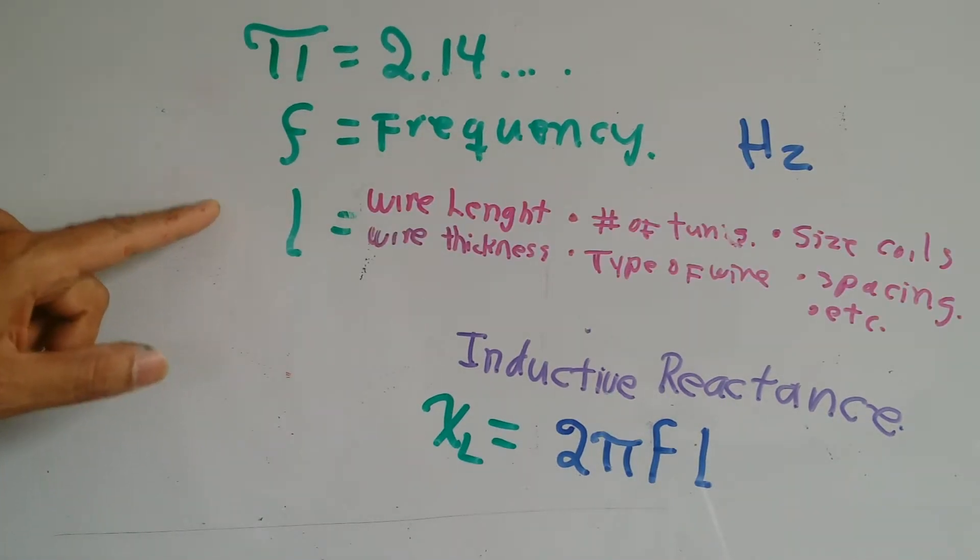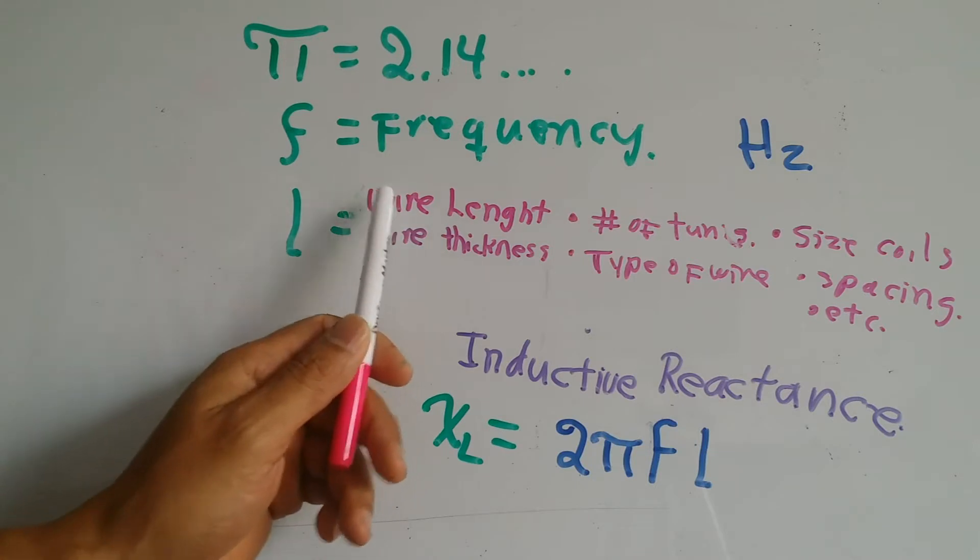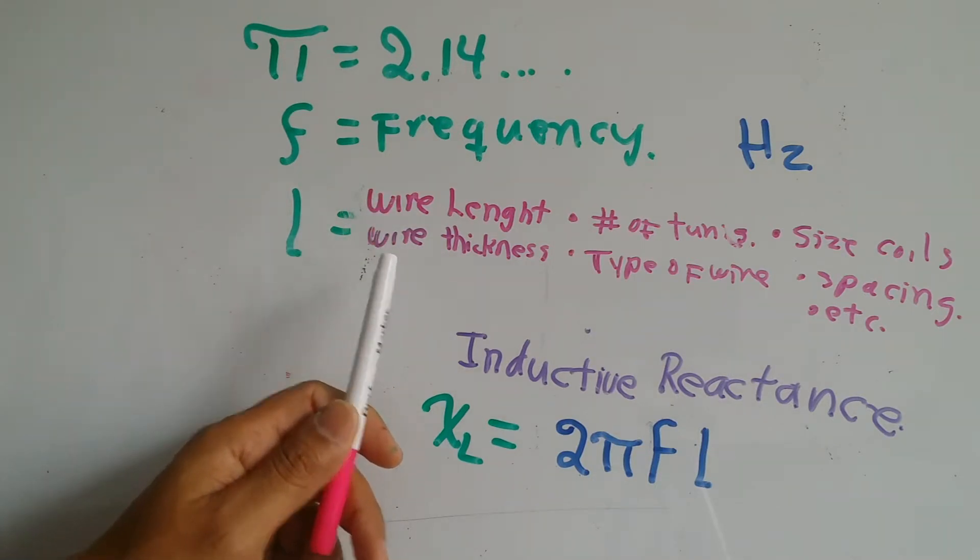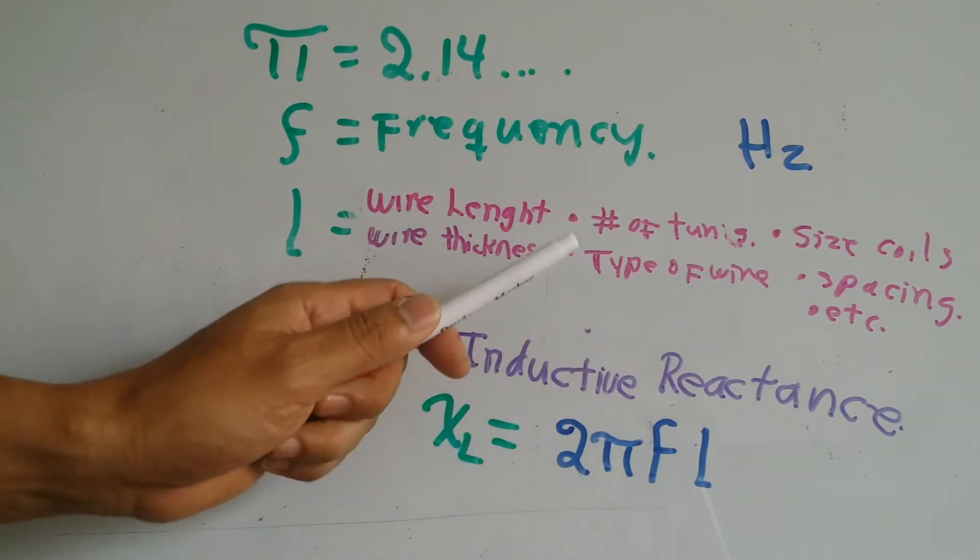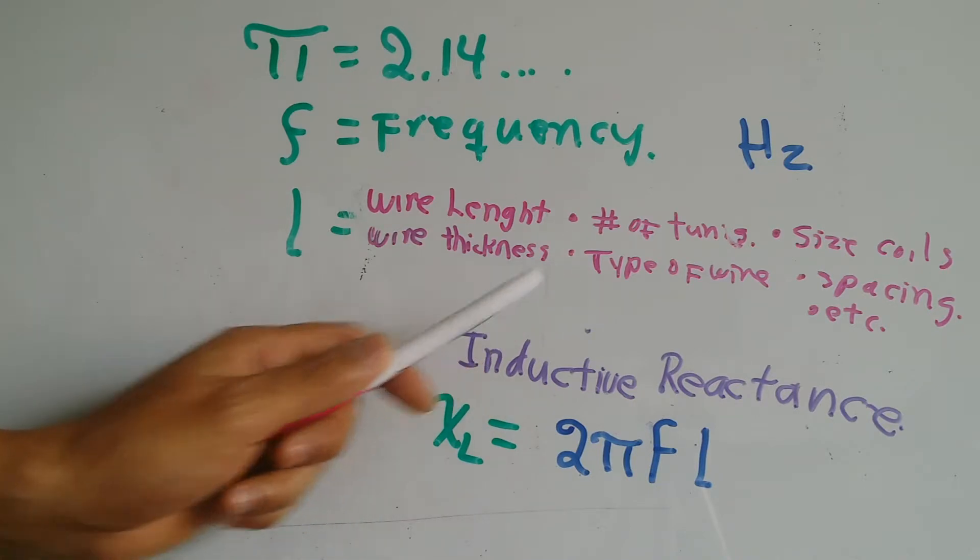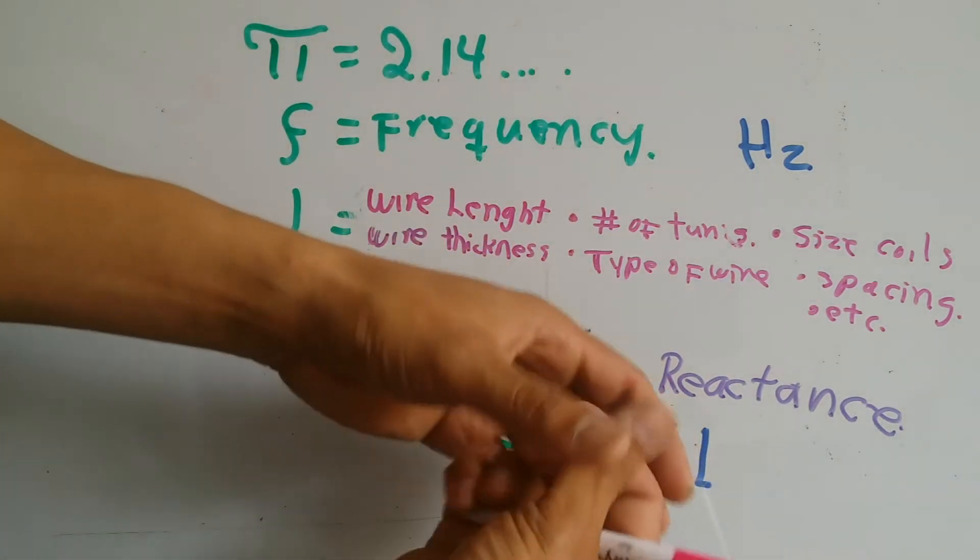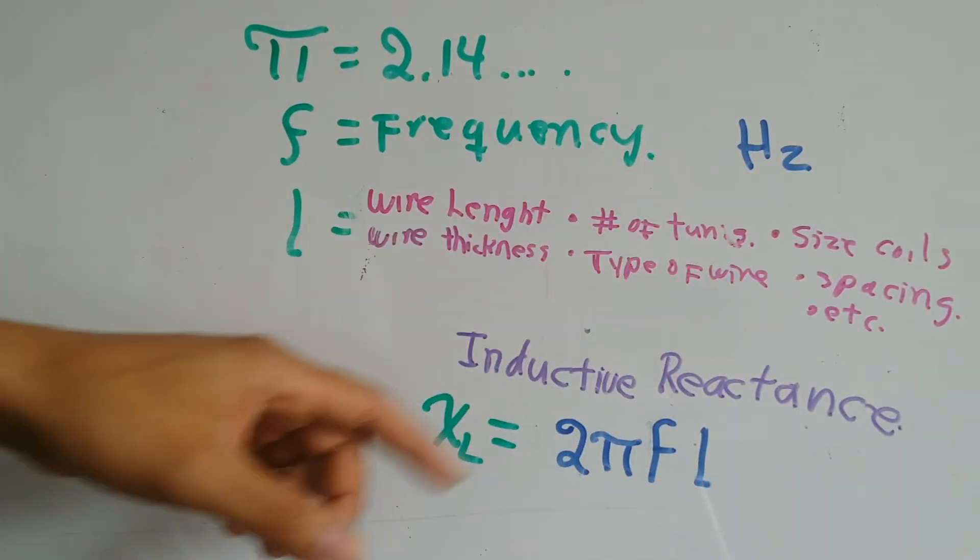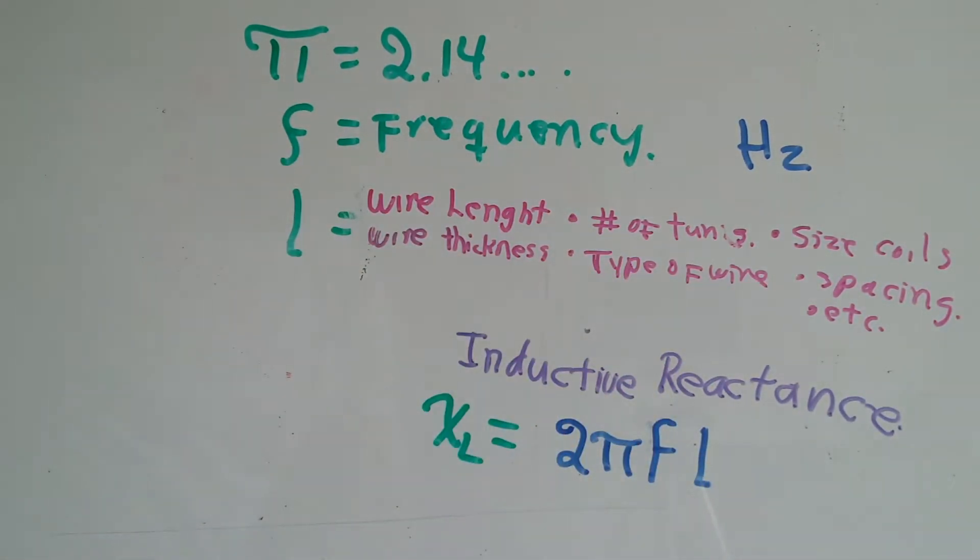The inductance depends on the wire length, the wire thickness that makes the coil, how many turns, the type of wire, the actual thickness of the coils, whether the coils are small or big, and the spacing between the coils.